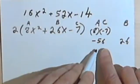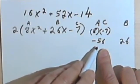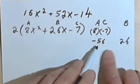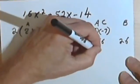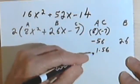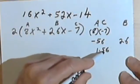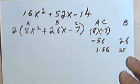So I want to find two factors of 56. One's going to be positive, one's going to be negative. And when I add them together, I'll get a 26. So 56 could be 1 times 56. The difference between 1 and 56 is 55. So that's not going to make it.